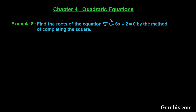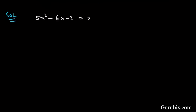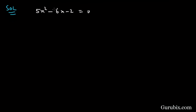Let us solve example number 8 of chapter 4. The question says: find the roots of the equation 5x² minus 6x minus 2 equals 0, by the method of completing the square. First, we write the given quadratic equation: 5x² minus 6x minus 2 equals 0. Secondly, we divide both sides by 5 so that the coefficient of x² becomes 1, giving us x² minus 6/5 x minus 2/5 equals 0.